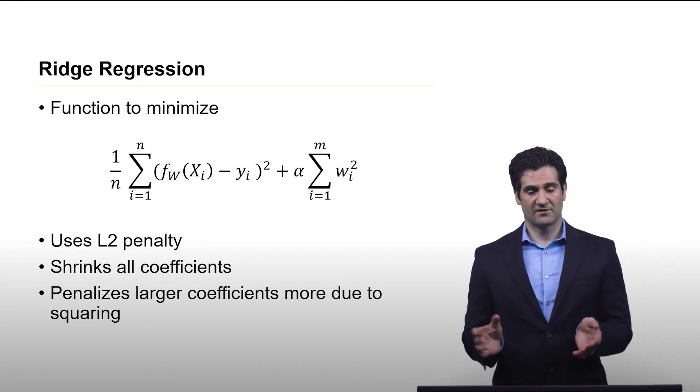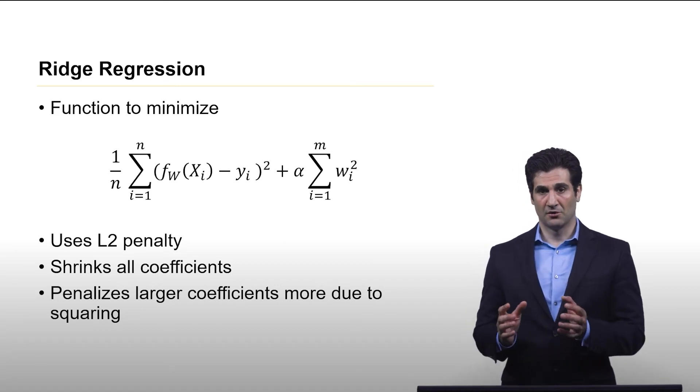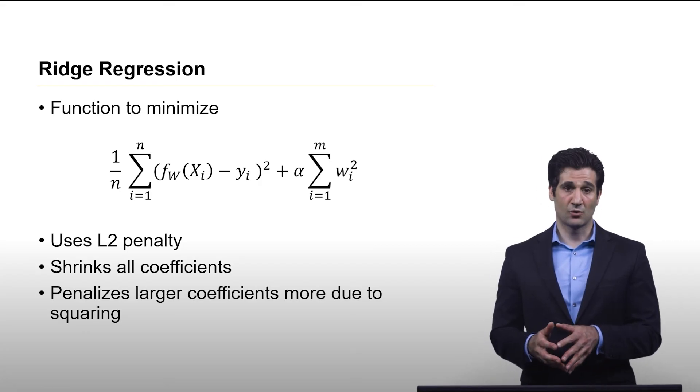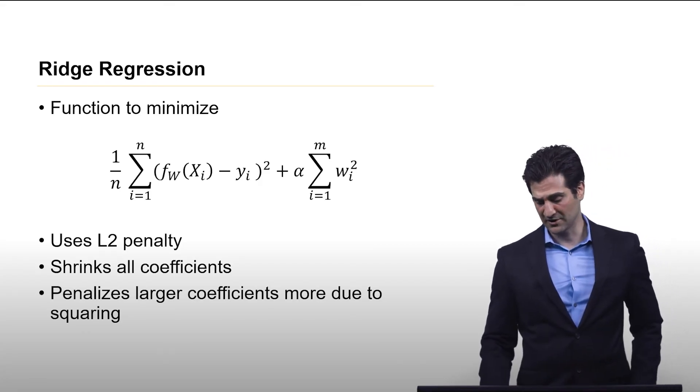This is going to have the effect of shrinking all the coefficients, but it's going to end up focusing on the larger coefficients because it's squaring the weights in that second summation there.